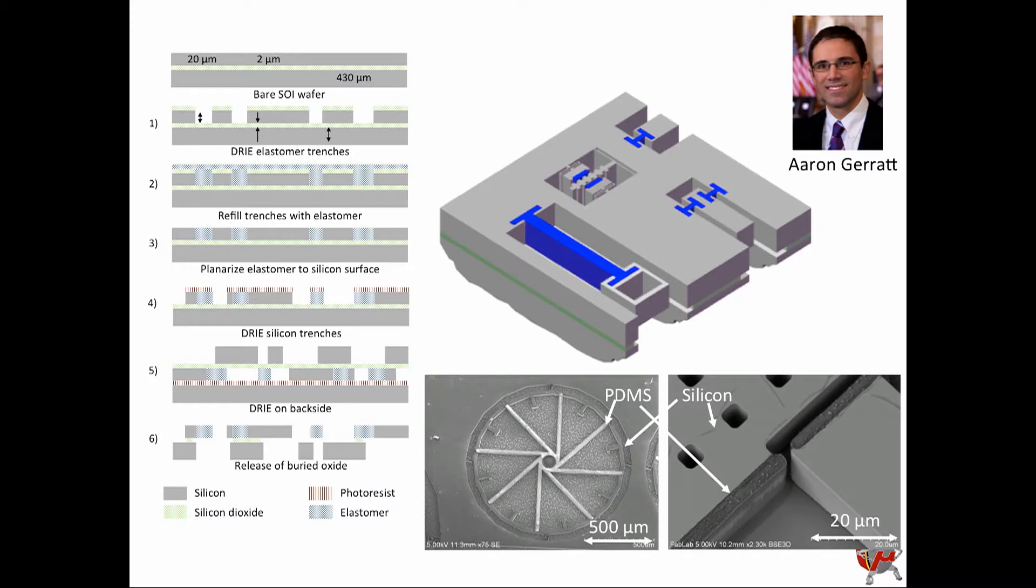So what we do to do this, to incorporate these soft materials, is we effectively have a micro-molding process. We etch trenches into our silicon wafer. We refill that with a rubber, a silicon elastomer, which is the blue here. We etch more trenches to create our silicon features, and we can do this across a whole silicon wafer. So we can make thousands of these at once, which is the cool thing.